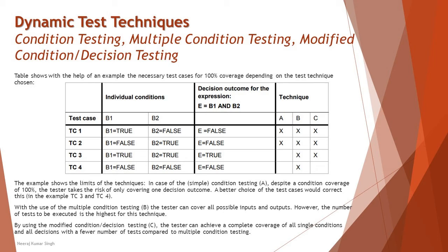Modified condition decision coverage, technique C, is similar to multiple condition testing but only considers combinations where an individual condition independently influences the decision outcome. For example, in TC4 both B1 and B2 are false — changing either one to true does not change the outcome when the other remains false through the AND gate logic, so it stays false regardless. Therefore, with just three test cases — TC1, TC2, and TC3 — you can achieve 100% MCDC coverage, making this a powerful technique.